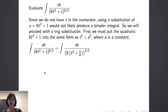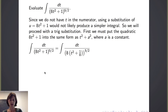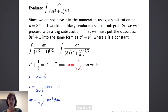If I factor out an 8 within the quantity 8t squared plus 1, I get in the denominator 8 times the quantity t squared plus 1 eighth, all raised to the 5 halves power. It is this quantity t squared plus 1 eighth that matches the form t squared plus a squared. Therefore, a is equal to 1 over the square root of 8, or 1 over 2 times the square root of 2. So we let t equal 1 over 2 times the square root of 2 times tangent of theta. Taking the derivative of both sides, dt equals 1 over 2 times the square root of 2 times secant squared theta d theta.